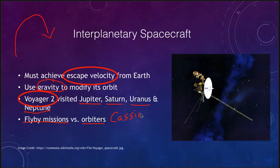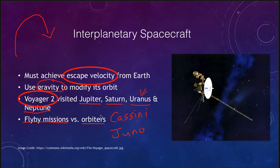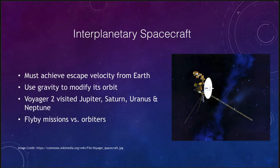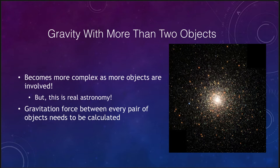That differs from orbiting missions such as the Cassini spacecraft that orbited Saturn for over a decade, or the Juno craft around Jupiter. With an orbiting mission you can study changes in a planet over years. With a flyby you can visit multiple planets but only get a brief view of each. To date, our best images and understanding of Uranus and Neptune come from the Voyager flyby — those planets have never been visited by any other spacecraft.